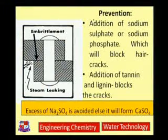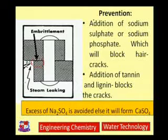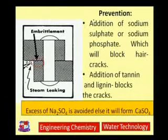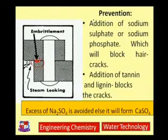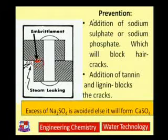Here you can see cracks from where steam is leaking and embrittlement has occurred — the boiler material is removed or dissolved in the form of sodium ferroate. This is nothing but alkaline corrosion of the boiler material.